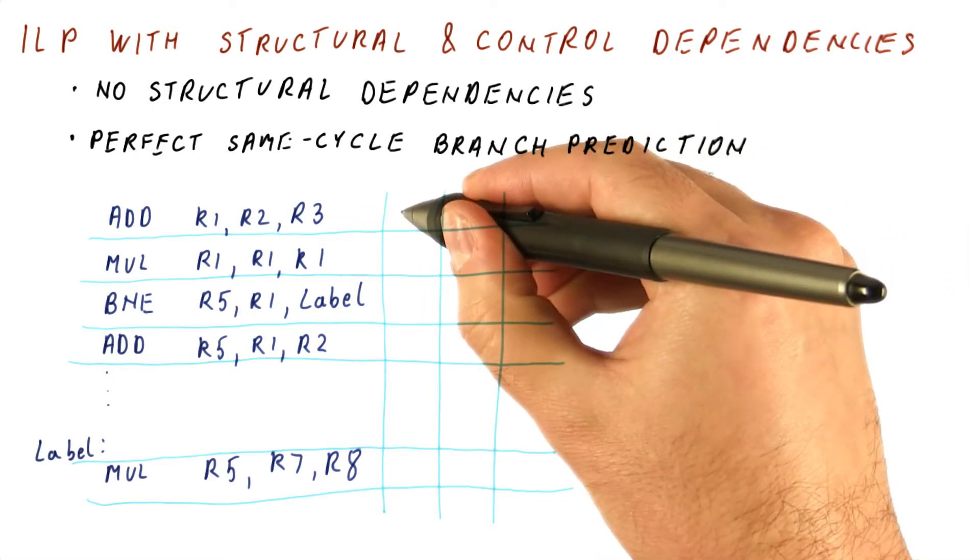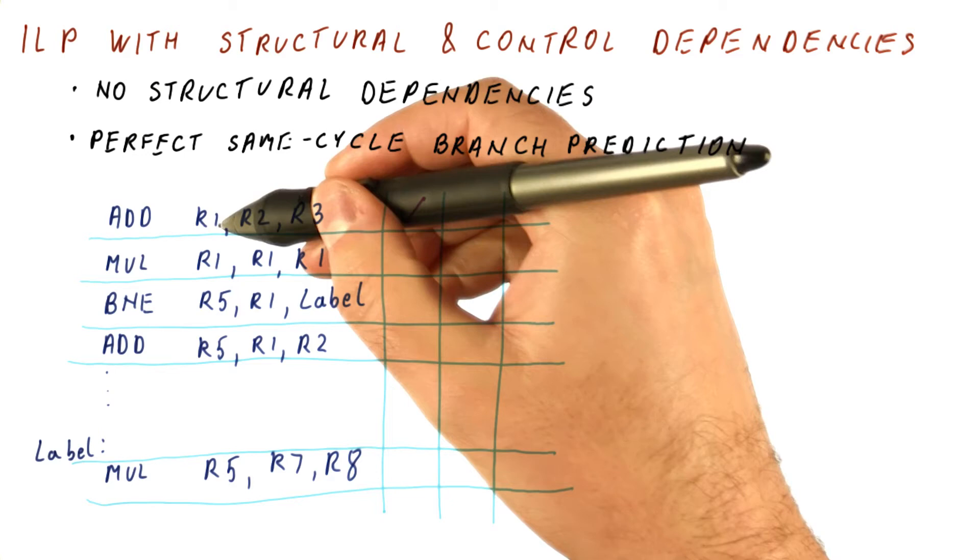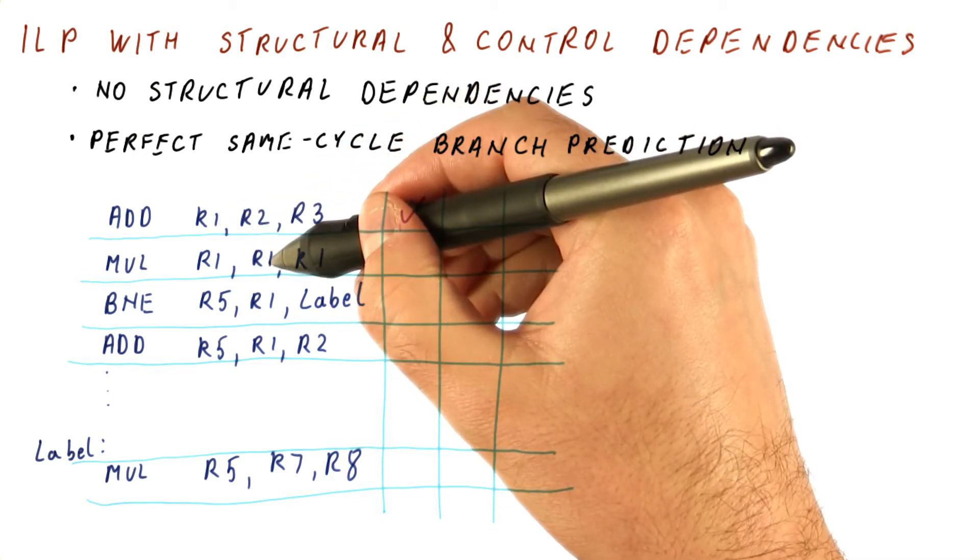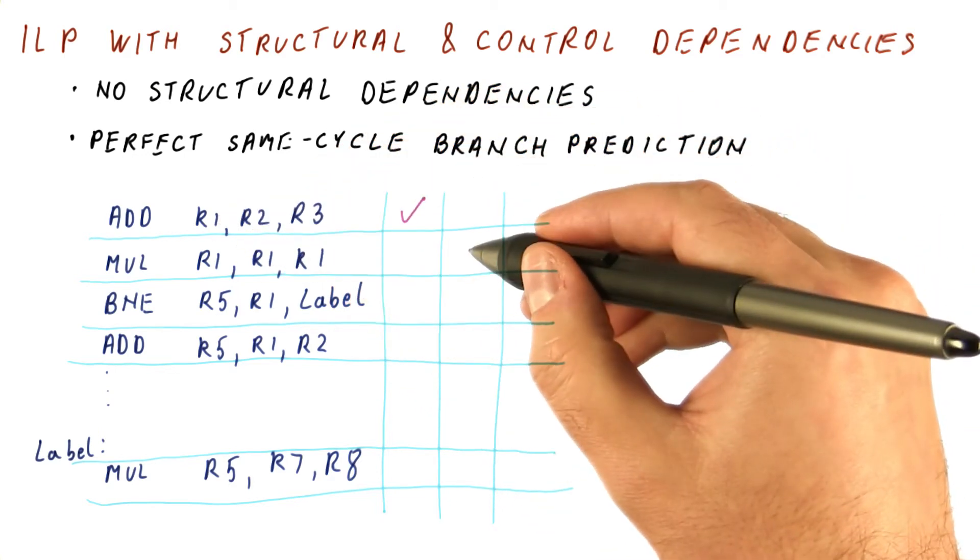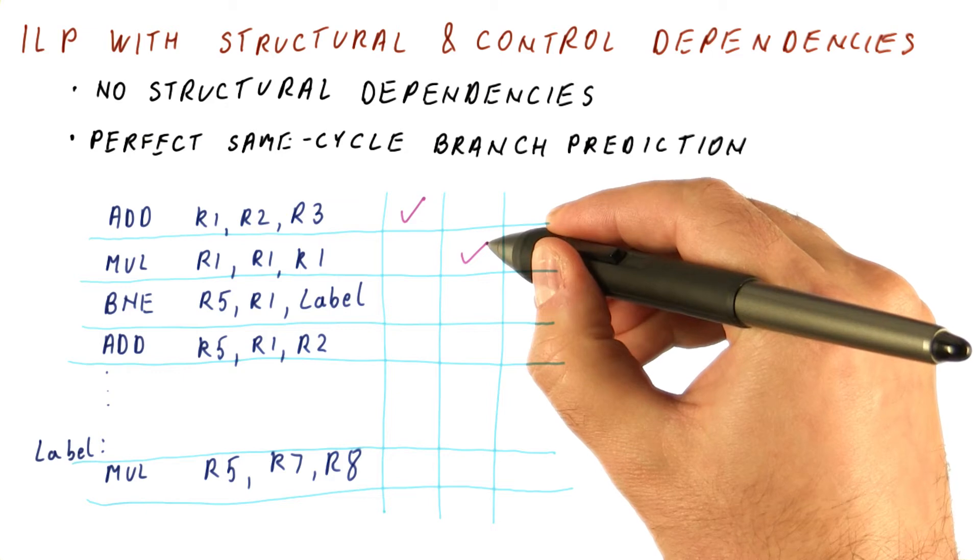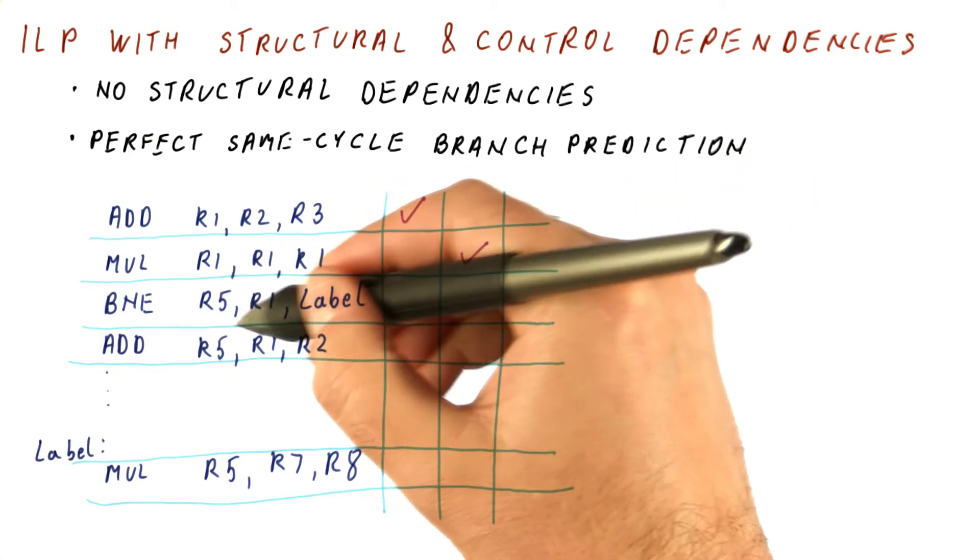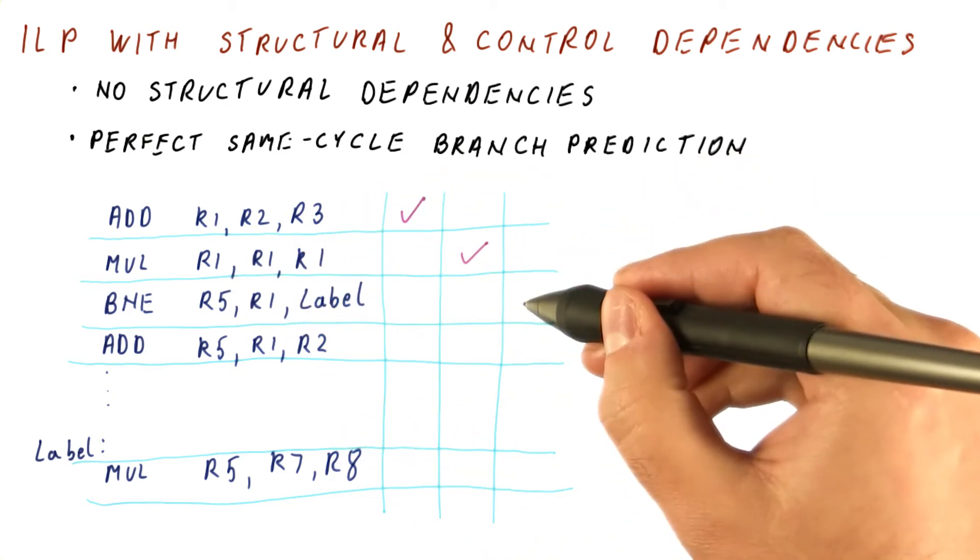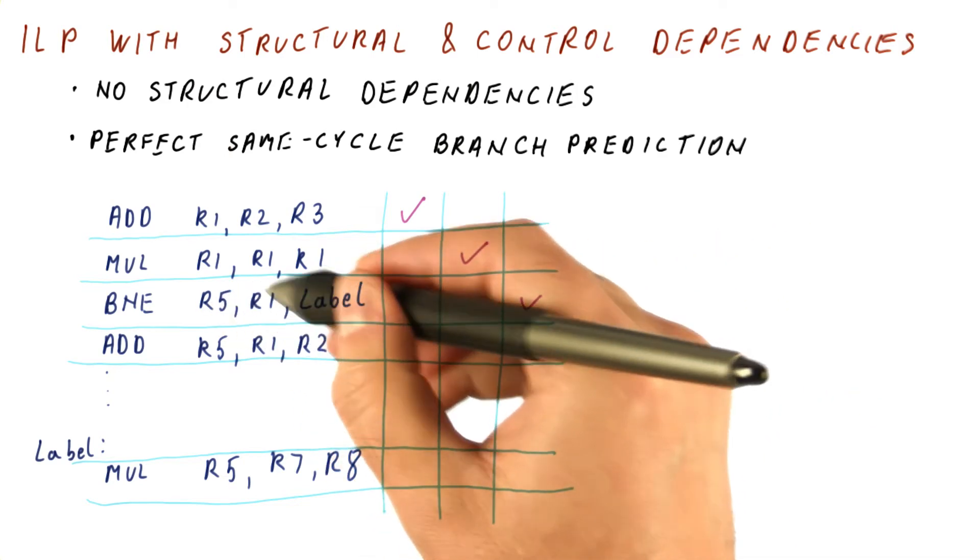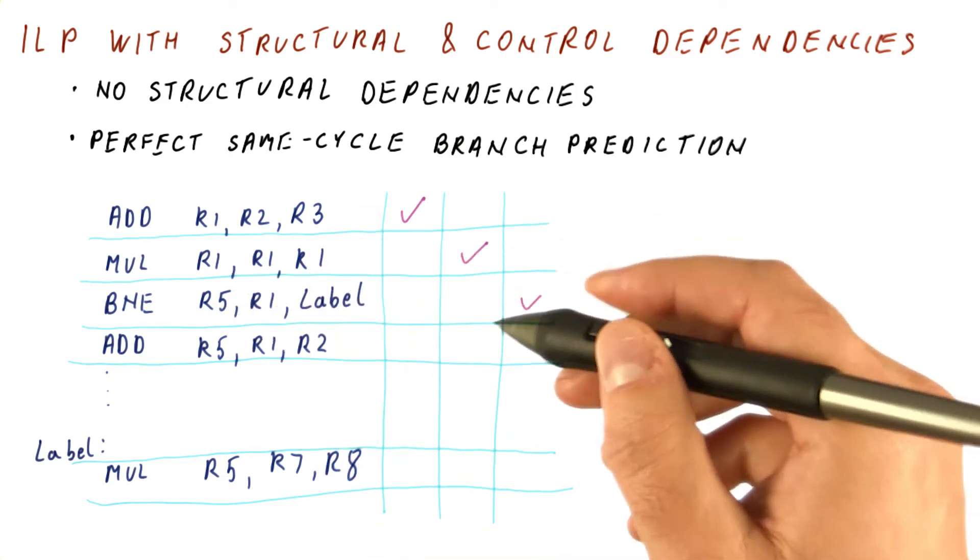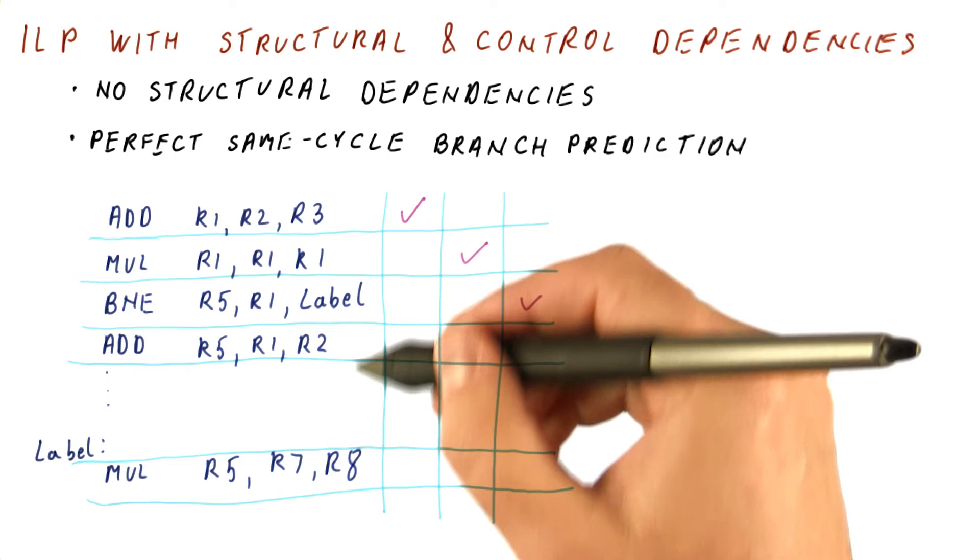So what happens is in the first cycle we can definitely do this. We cannot do them all in the first cycle because it depends on the add. So we will have to wait until the second cycle to do it. The branch can actually not be done until the third cycle because that's where we compare this. Now let's say that this branch is actually taken.